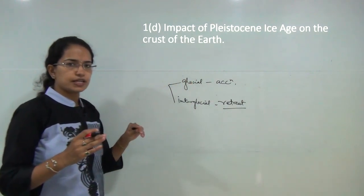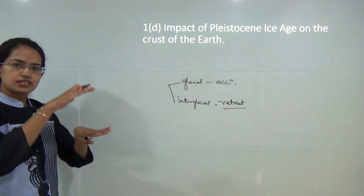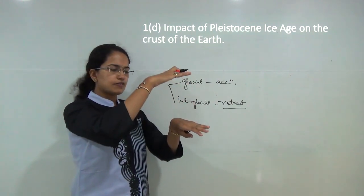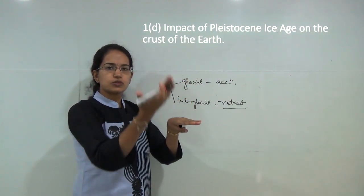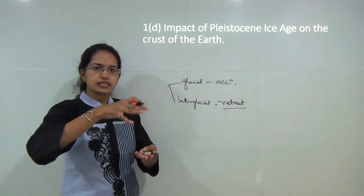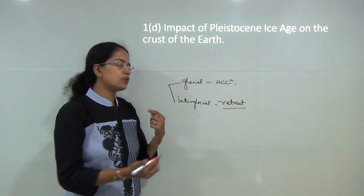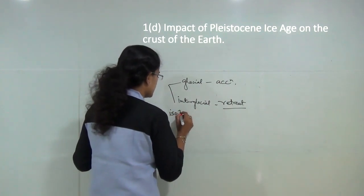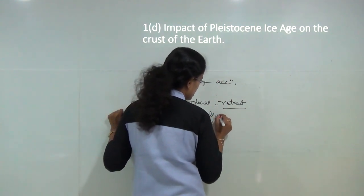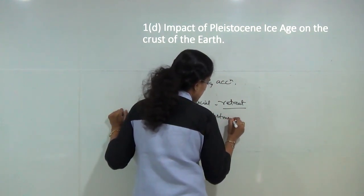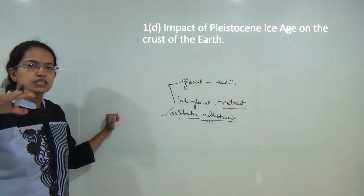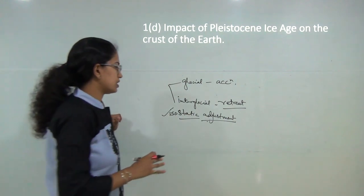When ice is present on the surface it exerts pressure, leading to sinking of the region. When ice melts, this leads to isostatic adjustment, as discussed under the study of isostasy. This isostatic adjustment led to the formation of numerous lakes in the northern hemisphere.